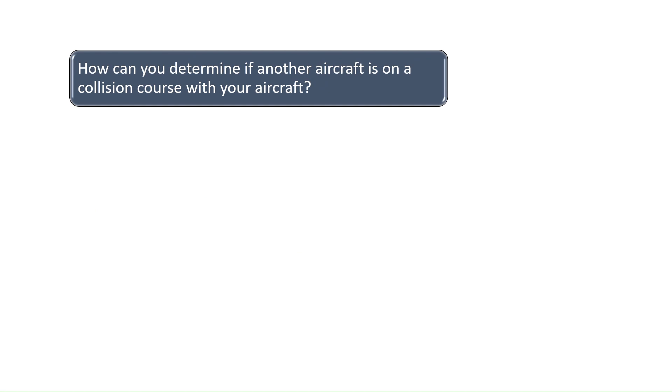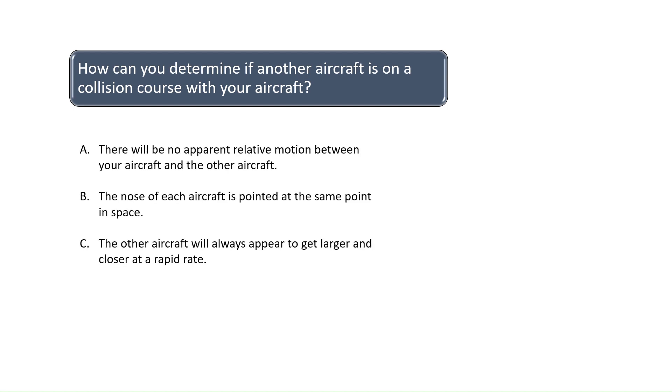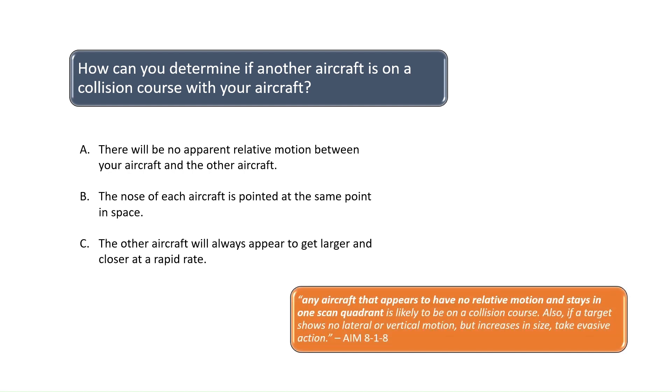How can you determine if another aircraft is on a collision course with your aircraft? According to Chapter 8-1-8 of the Aeronautical Information Manual, any aircraft that appears to have no relative motion and stays in one scan quadrant is likely to be on a collision course.